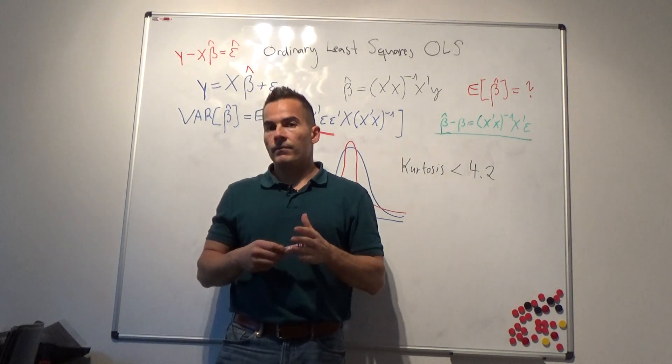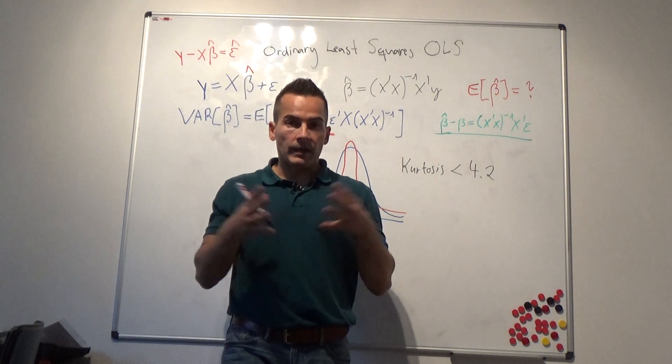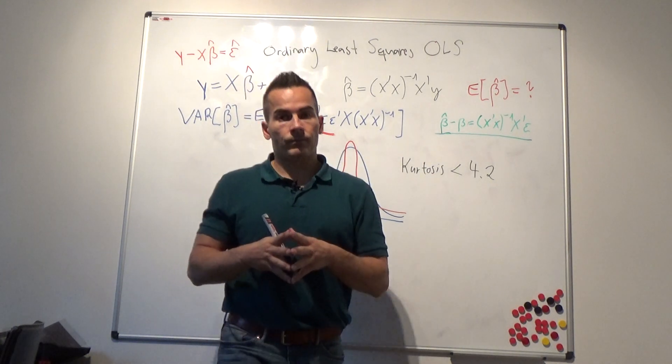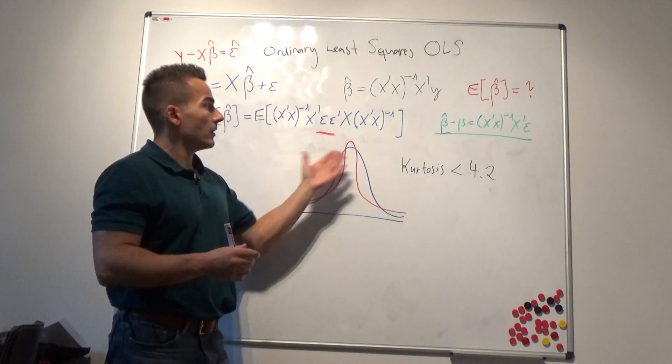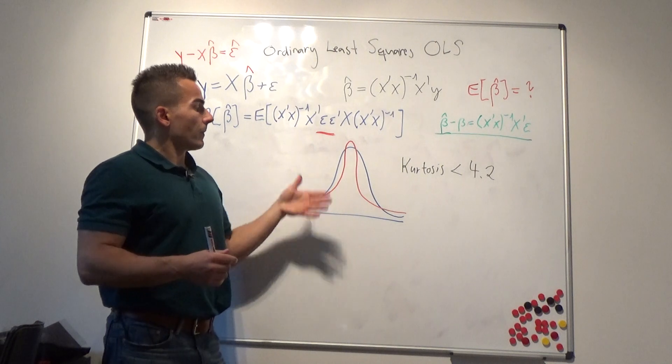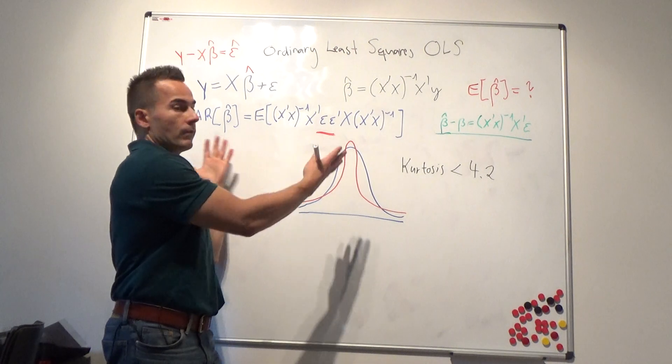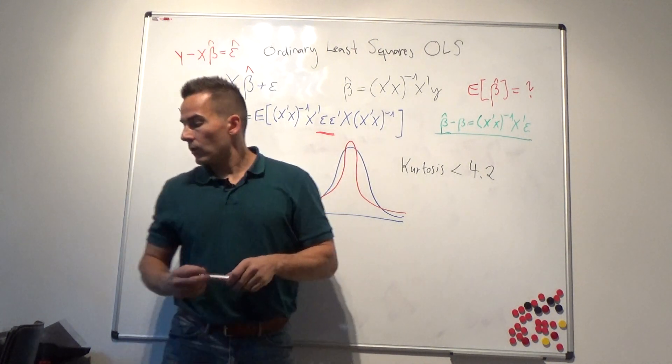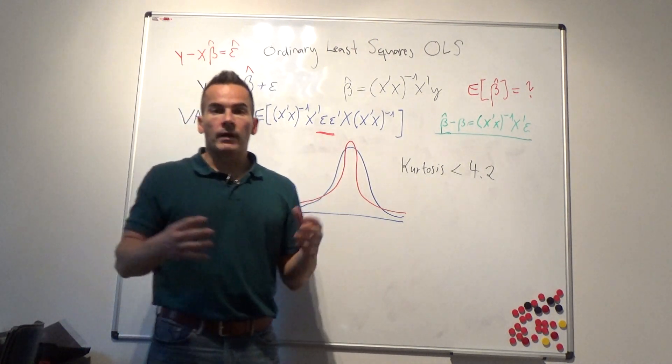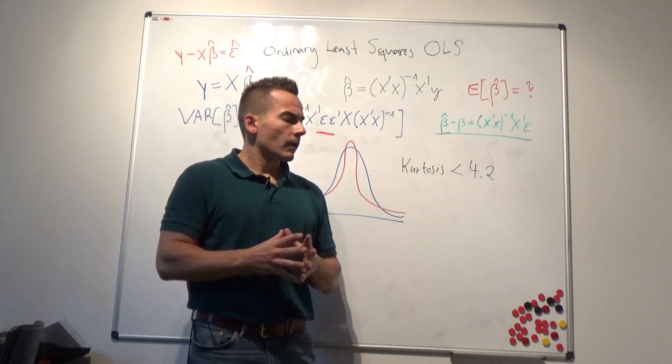That's a general problem in finance obviously, that people run models and out-of-sample these models don't work. This is exactly the problem because if you have something here that is not defined, then obviously everything becomes nonsense. So this is just something that I would like to add here.